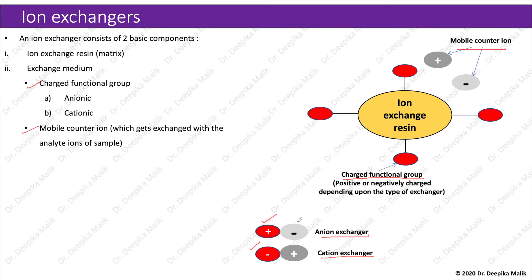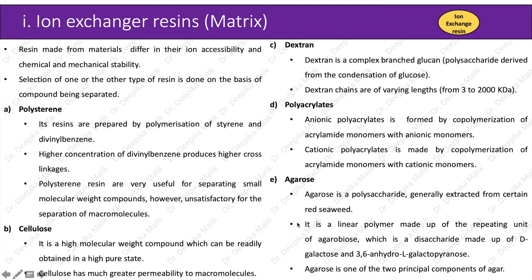Resins made from materials differ in their ion accessibility and chemical and mechanical stability. Selection of one or the other type of resin is done on the basis of the compound being separated. The different resins used are mainly made up of the following materials. First is polystyrene — its resins are prepared by polymerization of styrene and divinyl benzene. Higher concentration of divinyl benzene produces higher cross-linkages. Polystyrene resins are very useful for separating small molecular weight compounds; however, they are unsatisfactory for the separation of macromolecules.